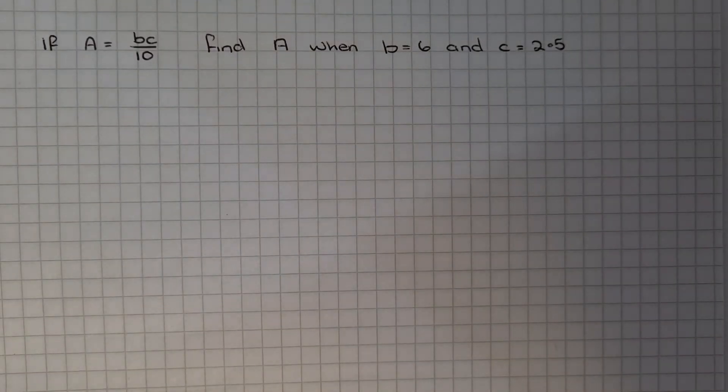Next example, if A equals BC over 10, so that's the formula, find A when B equals 6 and C equals 2.5. Same again, we're going to write down the formula.